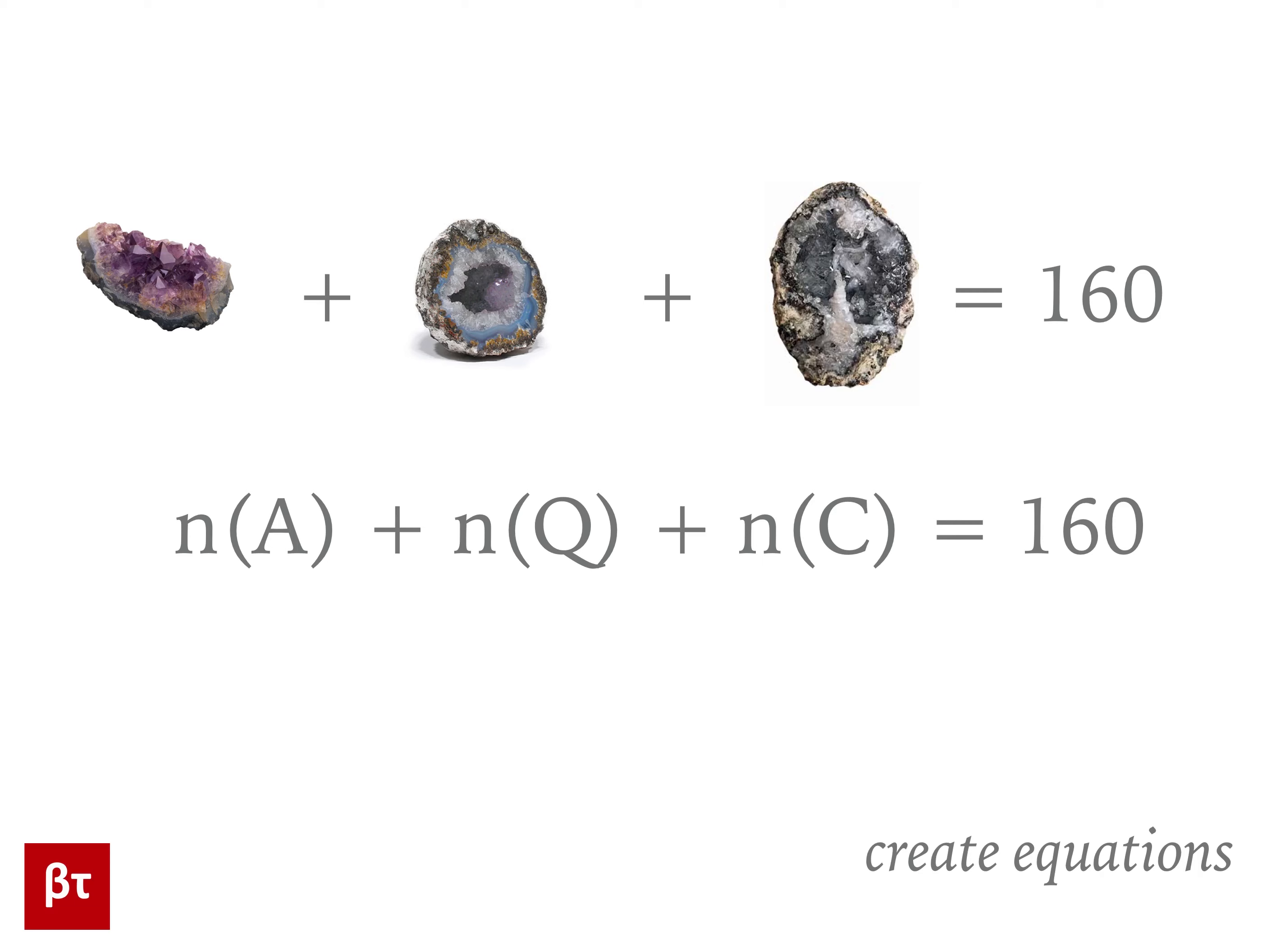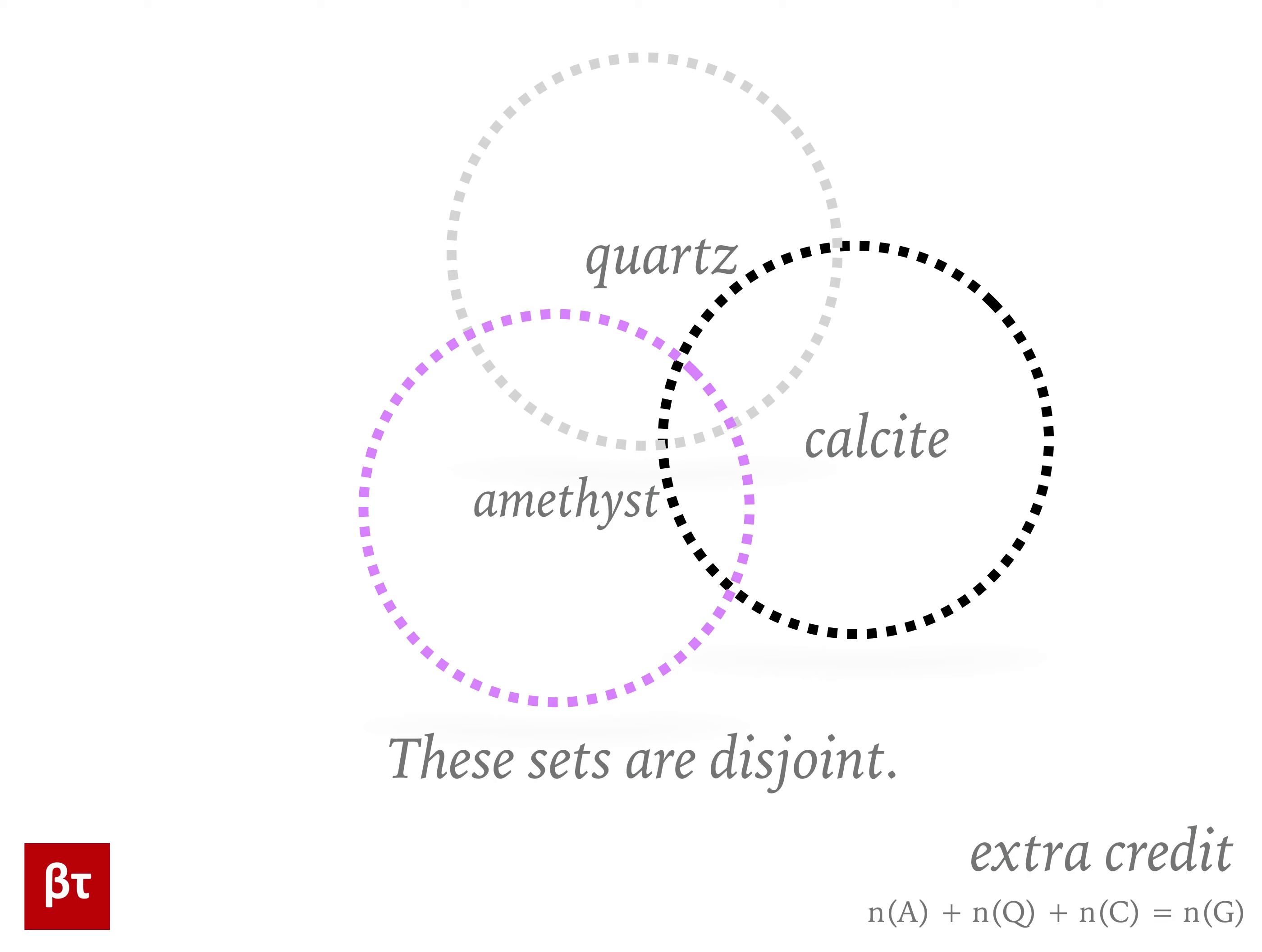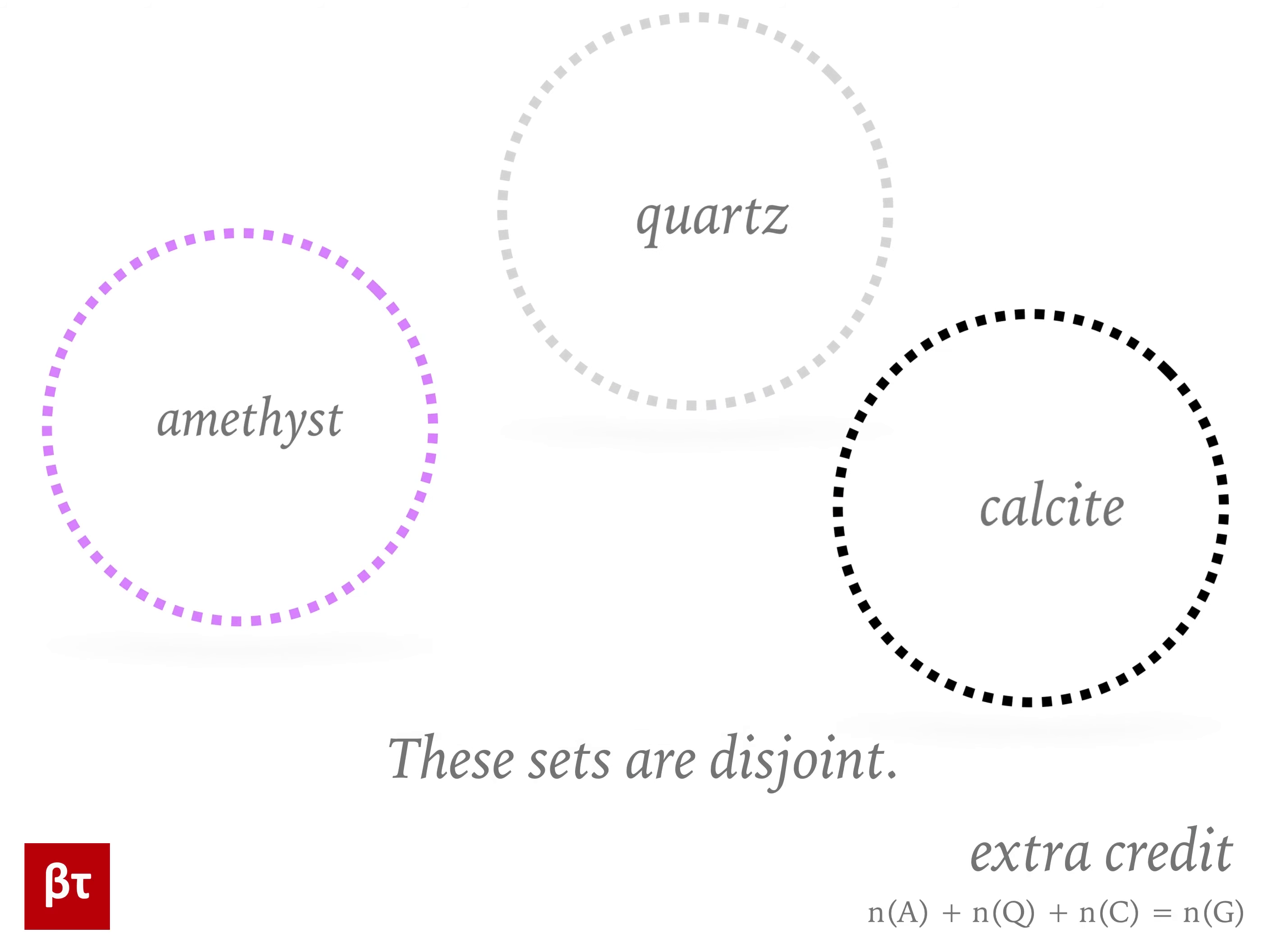There are two reasons why this equation makes sense, and this is your extra credit. First of all, we were told that each of these sets is distinct. In other words, they don't overlap. In finite, we call this disjoint.